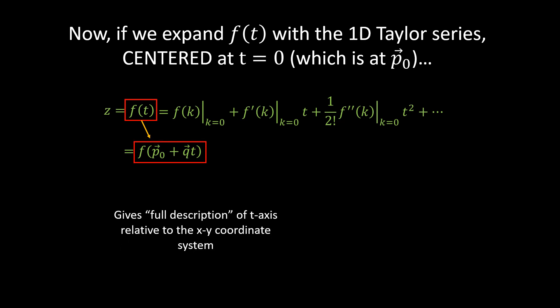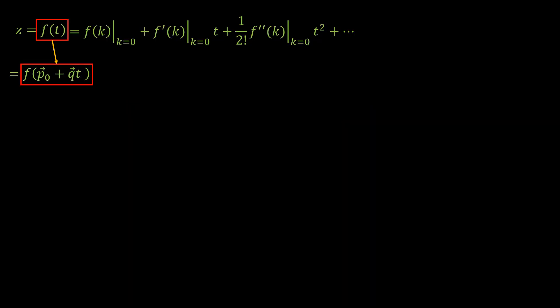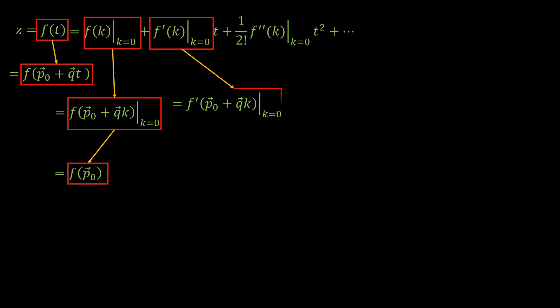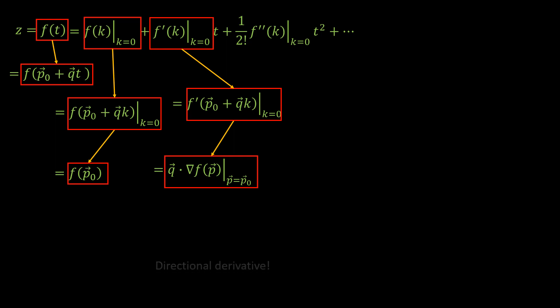That gives the full description of the t axis relative to the xy coordinate system. For the first term it's pretty simple — we just have f of p₀. But for the second term it's a bit more difficult, and we end up getting to the directional derivative. How exactly do we do that?